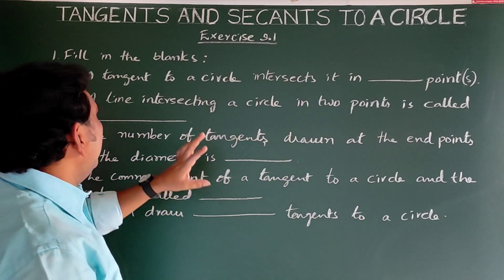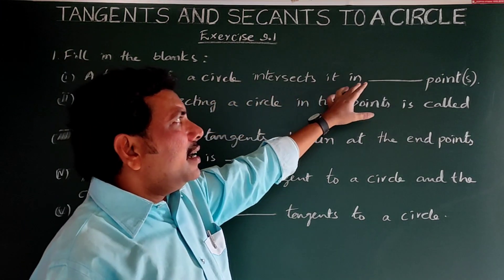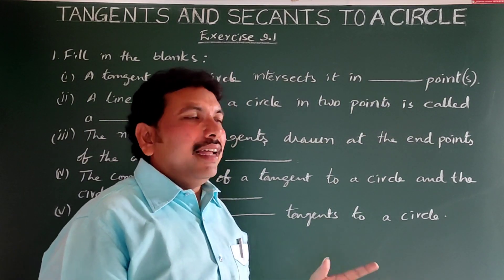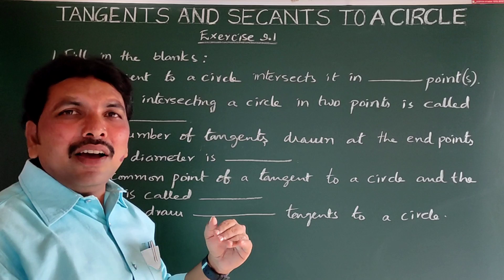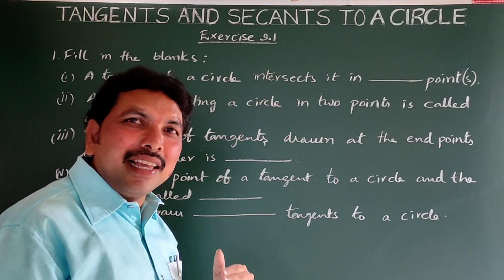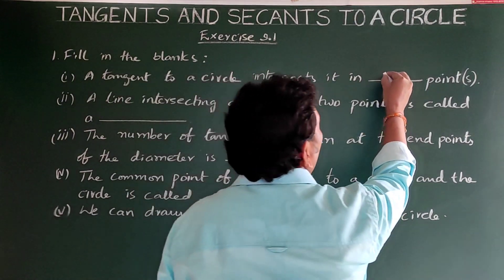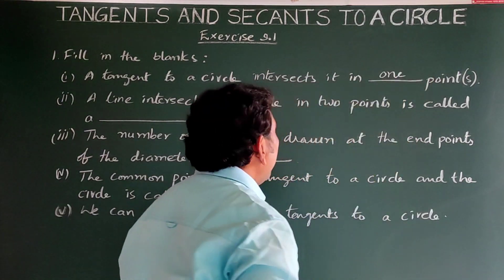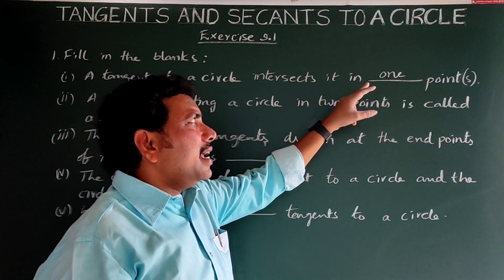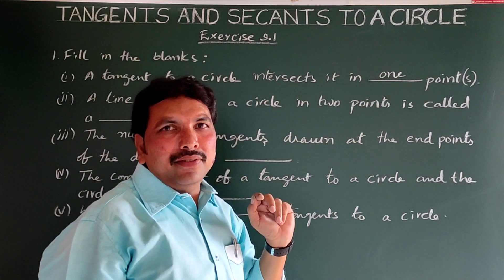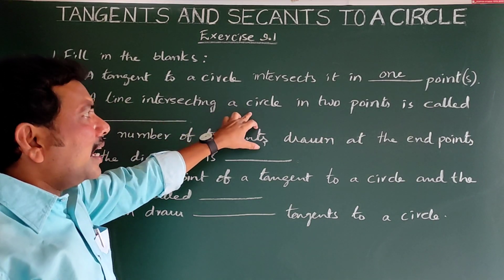First question: fill in the blanks. A tangent to a circle intersects it in how many points? As explained in the concept video, it is only one point. A tangent to a circle intersects it in one point.